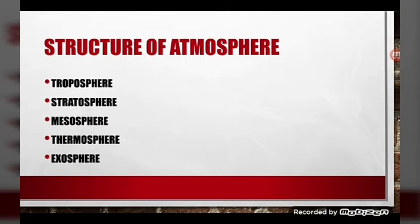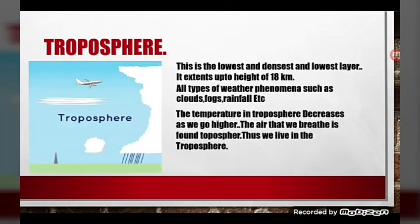The structure of the atmosphere consists of the troposphere, stratosphere, mesosphere, thermosphere, and exosphere. The troposphere is the lowest and densest layer. It extends up to a height of 18 kilometers. All types of weather phenomena such as clouds, fogs, and rainfall take place in this layer. The temperature in the troposphere decreases as we go higher.